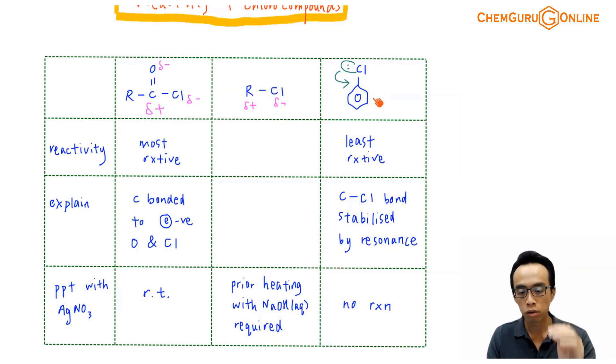Now chlorobenzene, there's no reaction. Even if you do heating, you cannot break the C-Cl bond. If it is attached to benzene, it is stabilized by resonance. So we do not get any precipitate if we are trying to react with chlorobenzene.